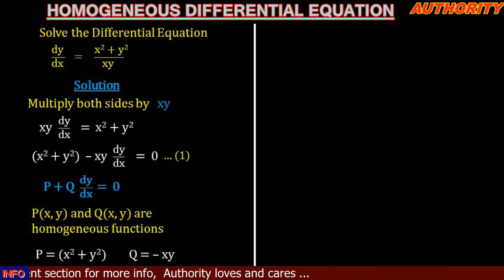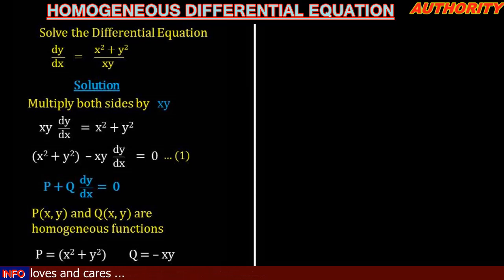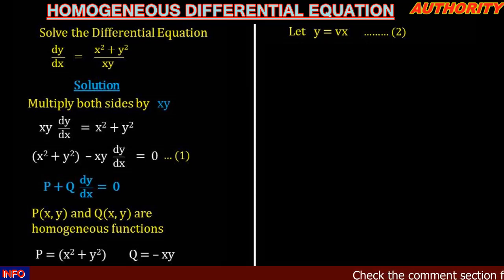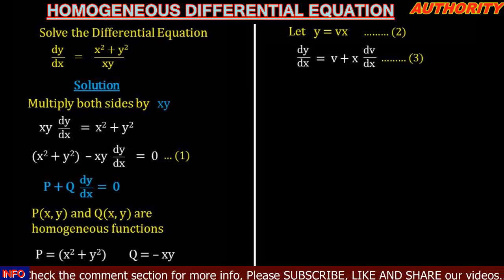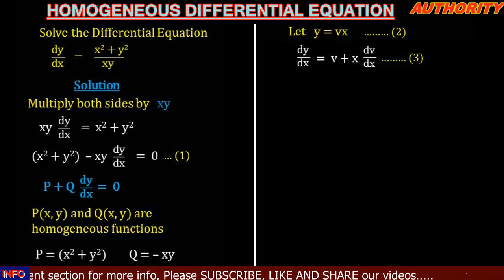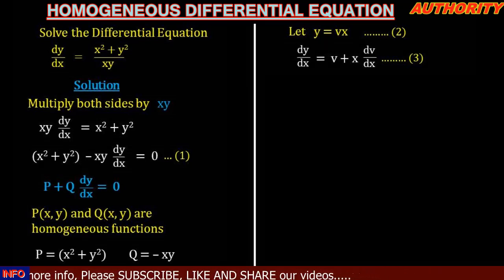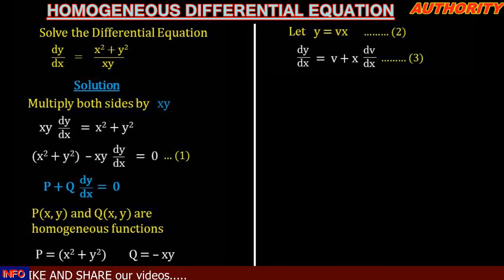Comparing equation one with P plus Q dy/dx equals zero, we can see they look alike, so this is a homogeneous differential equation. That means P equals x squared plus y squared and Q equals negative xy. Now we let y equal vx — anywhere we see y we replace it with vx. Differentiating, dy/dx equals v plus x dv/dx.